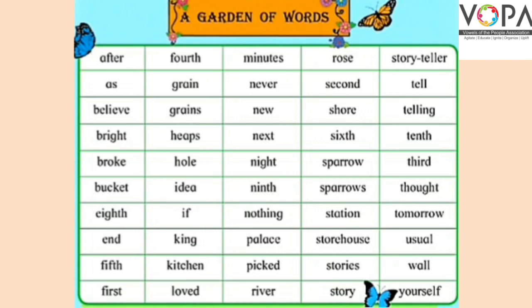'Love' — l, o, v, e, d. Love یعنی پیار۔ 'Minutes' — m, i, n, u, t, e, s. Minute — جس طرح گھڑی میں منٹ ہوتے ہیں، وہی minutes ہے یہ۔ 'Never' — n, e, v, e, r. Never یعنی کبھی بھی نہیں۔